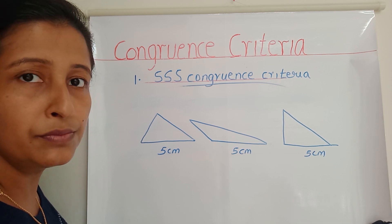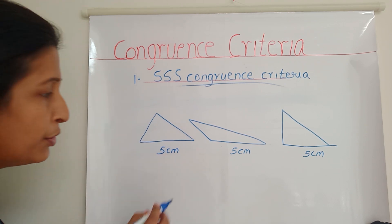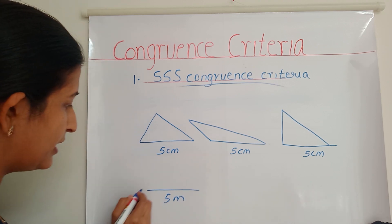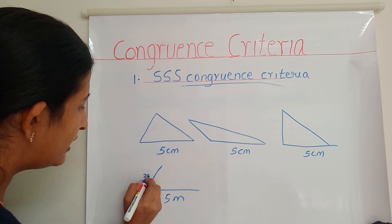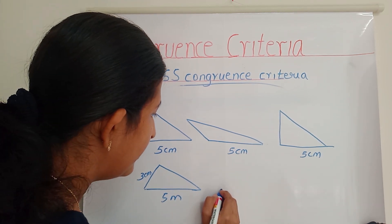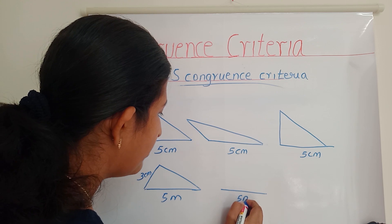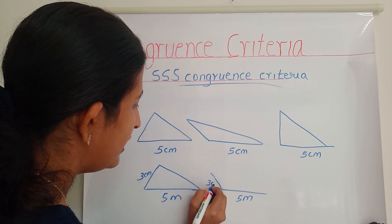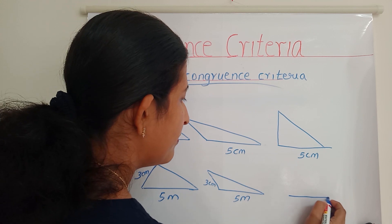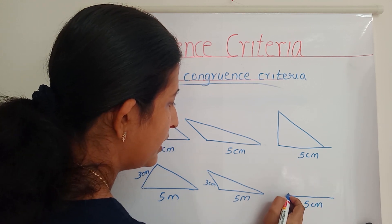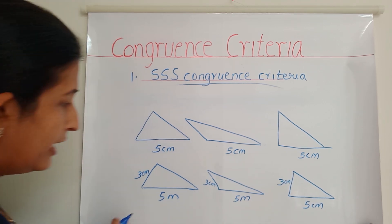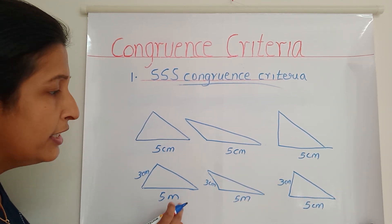Alan says he needs one more clue. Anna gives a second clue: the other side is 3 centimeters. So again he tried to draw triangles — first side is 5 centimeters and the next side is 3 centimeters. Even from these two clues, he still got three types of triangles.